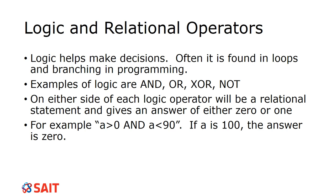NOT means it's kind of the opposite of AND — both relational operators have to be false for NOT to be true. It's the case where two negatives make a positive. It's not used a lot but it is included as an example.